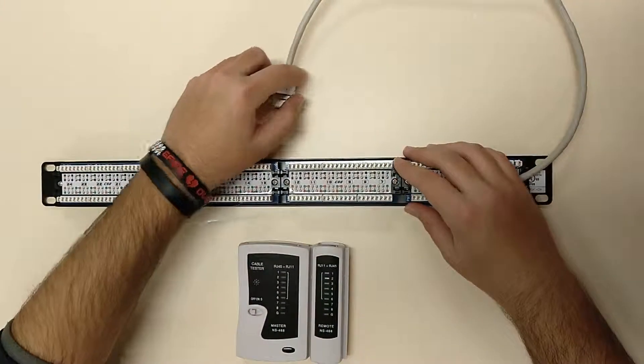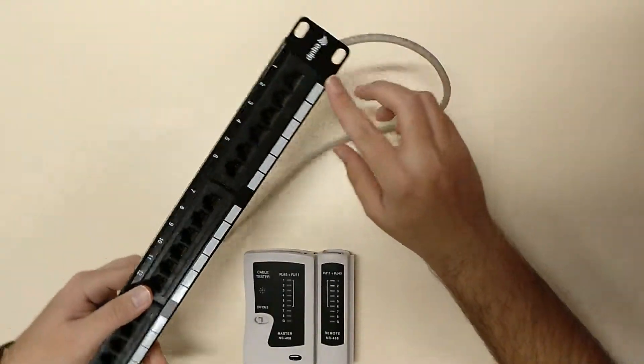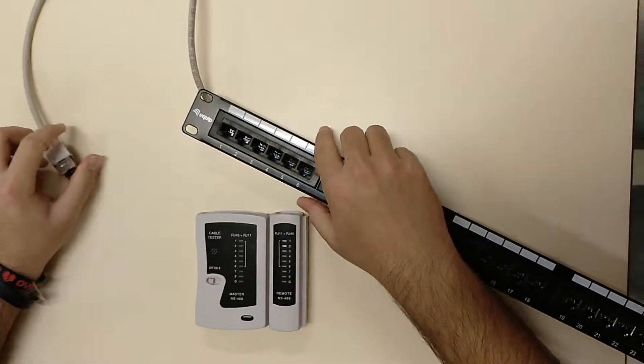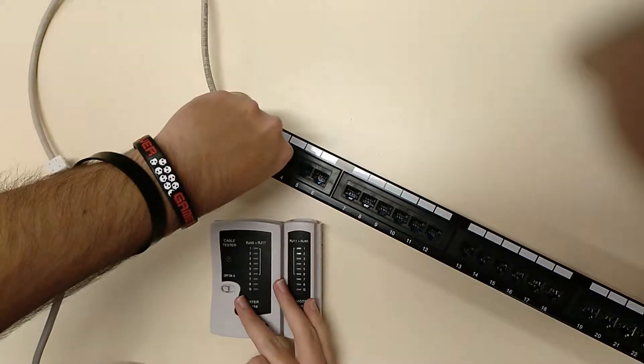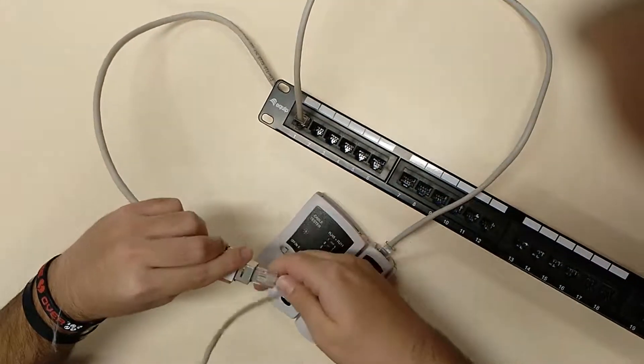Finally, we will check the patch panel to see if it works correctly. For this, we need our finished patch panel, two network cables with RJ45 connections, one that will connect from the patch panel to the tester, and another from the wall circuit to the other part of the tester. Now you'd see if all the lights light up in the correct order.